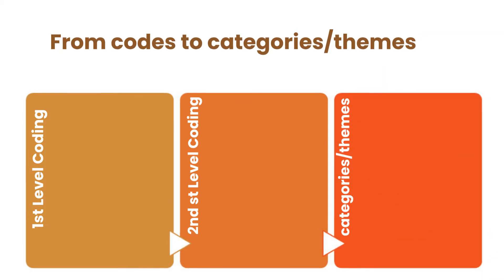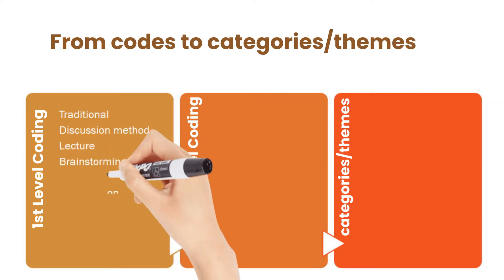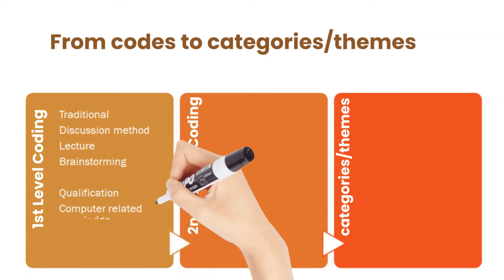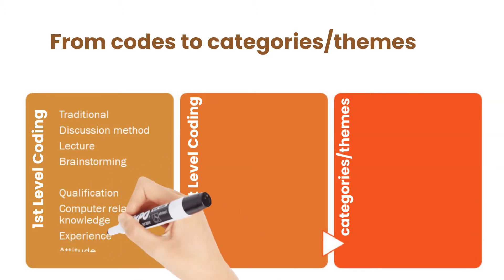In the first level coding, you can see there are so many codes or important chunks of the data. Traditional, discussion method, lecture, brainstorming, qualification, computer related knowledge, experience and attitude. Then this first level coding goes to second level coding.